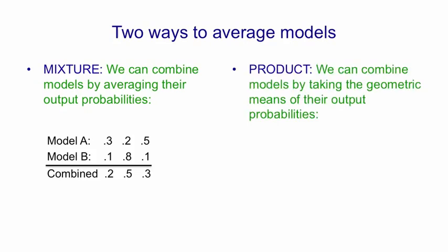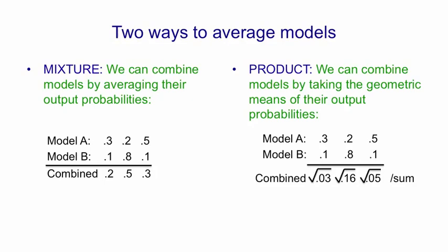A different way of combining models is to use a product of the probabilities. Here we take a geometric mean of the same probabilities. So model A and model B again assign the same probabilities as they did before. But now what we do is we multiply each pair of probabilities together and then take the square root. That's the geometric mean. And the geometric means will generally add up to less than one. So we have to divide by the sum of the geometric means to normalize the distribution so that it adds up to one again.